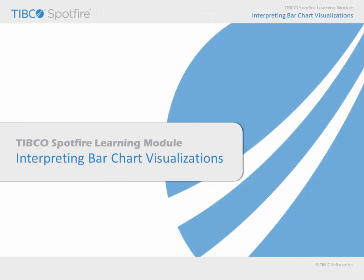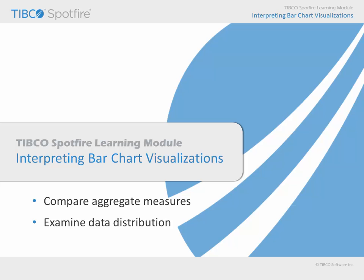In this learning module, we will consider the ways in which Spotfire bar charts may be used to visualize data, including the traditional bar chart configuration, where you can compare sums or averages, or the configuration of histograms, where you can examine data distribution. Let's take a look at how to interpret these two types of bar chart visualizations.